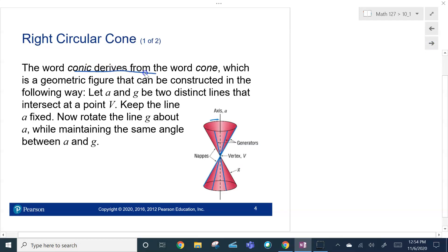Conic is just derived from the word cone. It's constructed in the following way. You have this axis. We're going to call axis A here. And then we have this generator line G here. And what we're going to do is we're going to rotate this line G, what we call a generator, while maintaining the same angle.